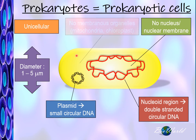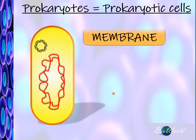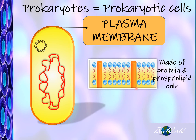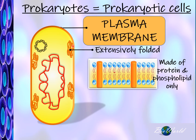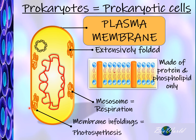The cytoplasm of prokaryotes is clear because they have no membranous organelles such as mitochondria or chloroplast. Prokaryotes have a plasma membrane made up of phospholipids and protein, but they do not have cholesterol or carbohydrates. The plasma membrane folds extensively inward to form structures called mesosomes. Since prokaryotes have no mitochondria, they store enzymes in the mesosomes to carry out respiration and generate ATP. Photosynthetic prokaryotes also store photosynthetic pigments in these membrane infoldings to carry out photosynthesis.